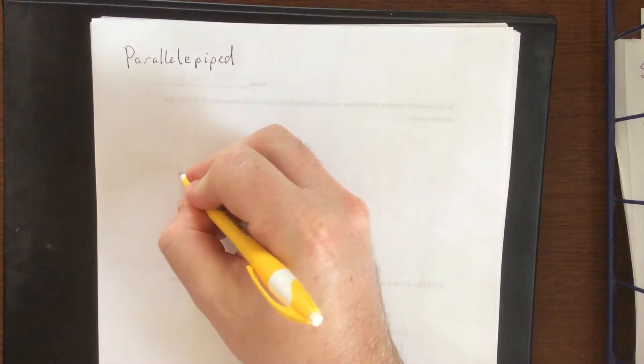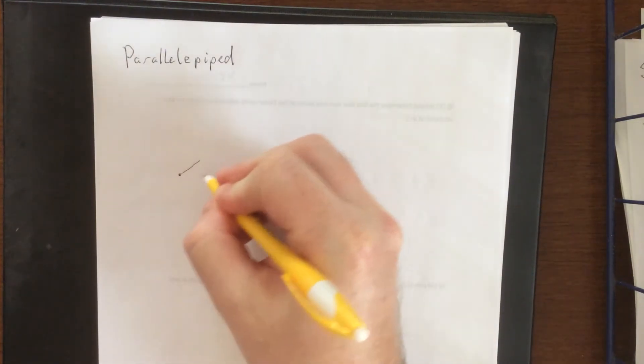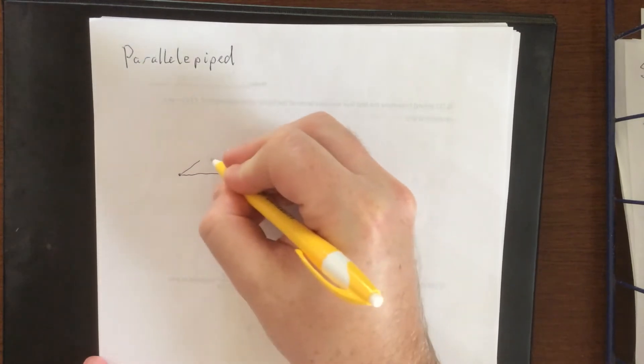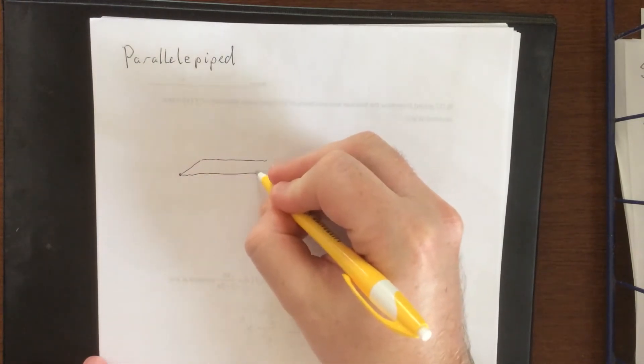So imagine that you take a bunch of rectangles and you slap them together. In three dimensions you would get a box.